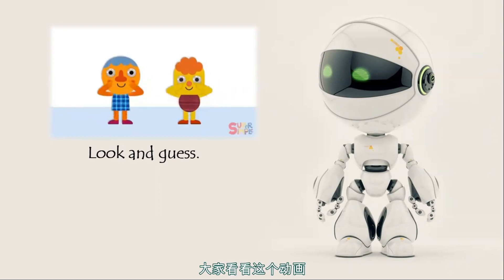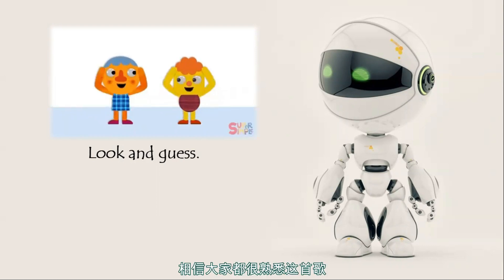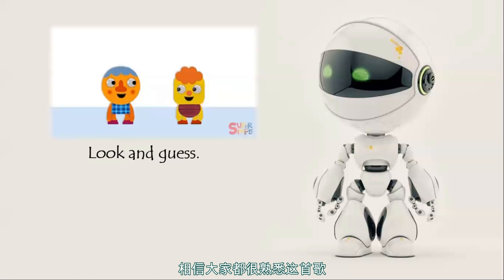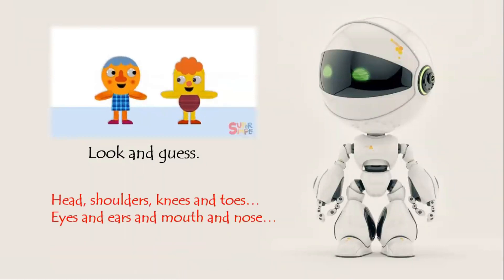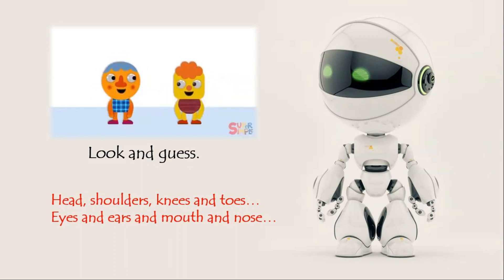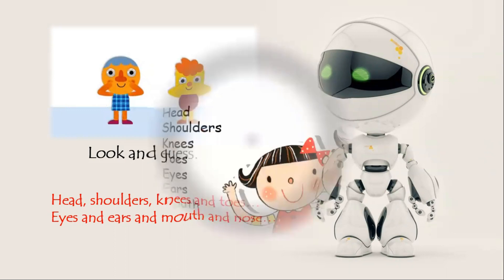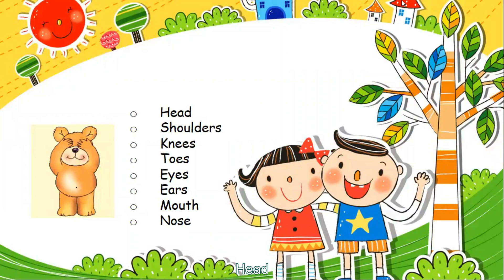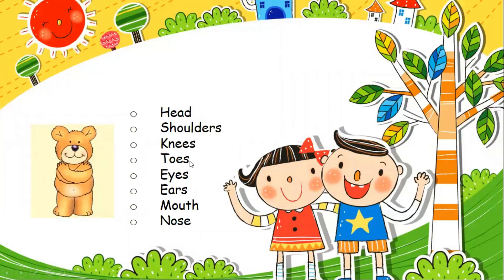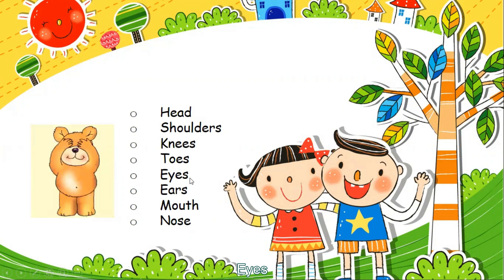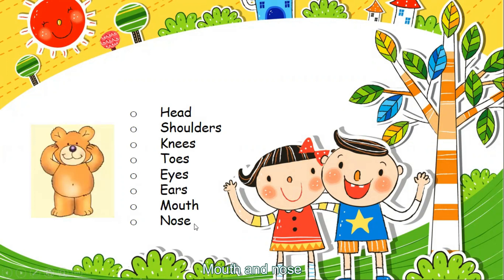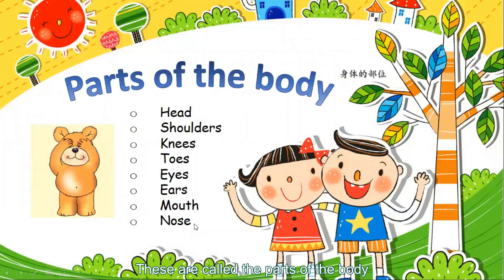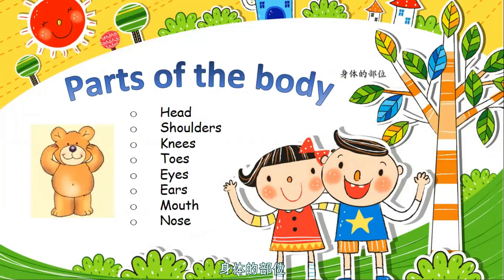同事们，大家看看这个动画，你们会联想到什么歌呢？相信大家都很熟悉这首歌。From the song, we can hear the words such as head, shoulders, knees, toes, eyes, ears, mouth and nose. These are called parts of the body. 身体的部位。